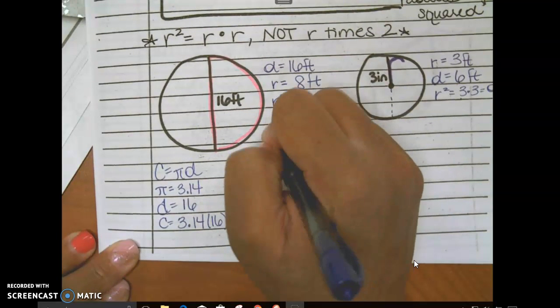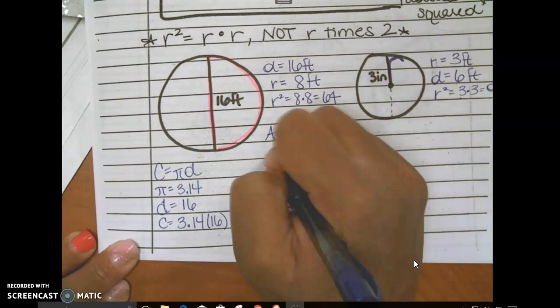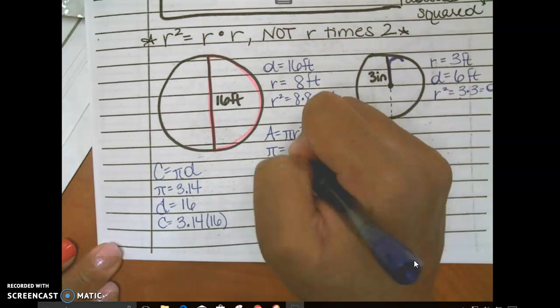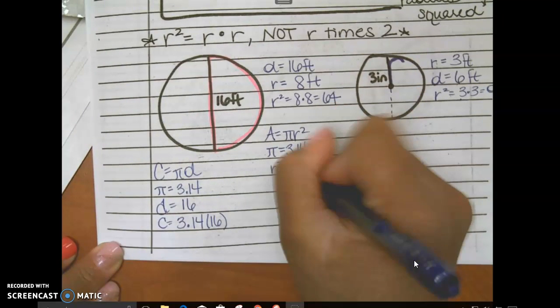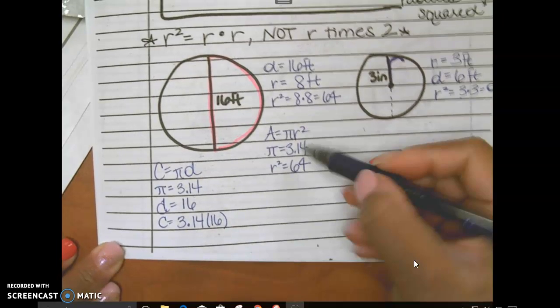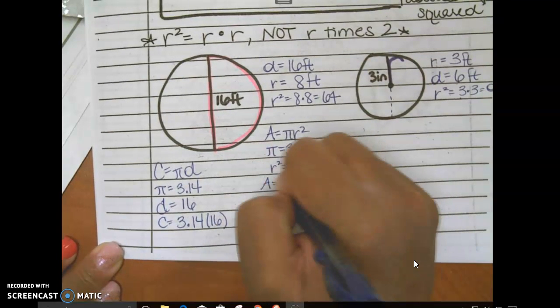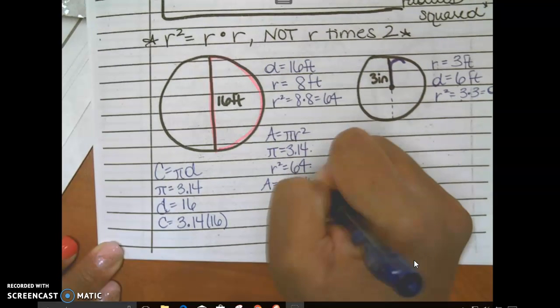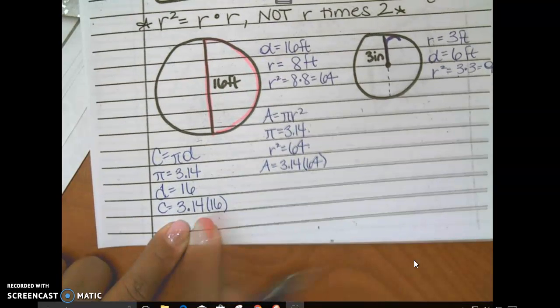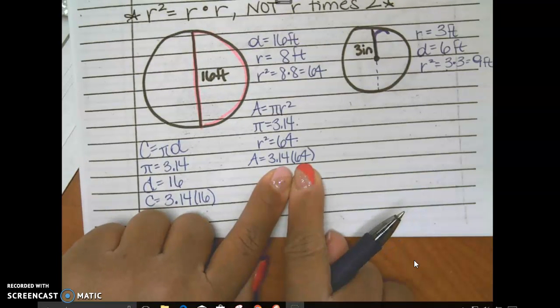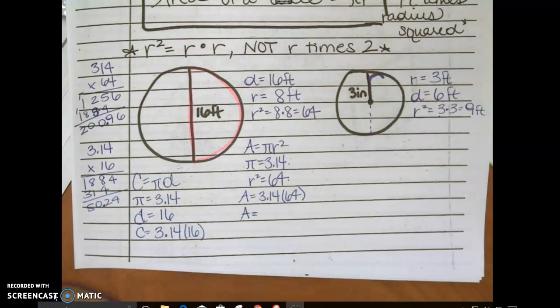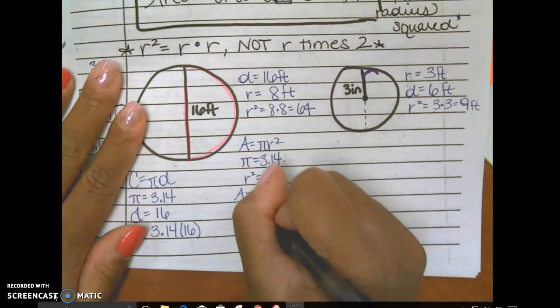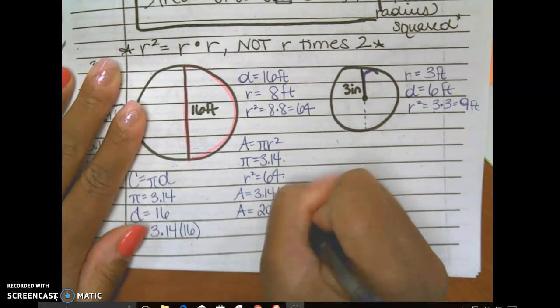So this is now a multiplication problem. 3.14 times 16 is going to be my circumference. Then for area, I'm going to give myself a little bit more room up here. Pi R squared. What is pi? 3.14. What is radius squared? 64. Somebody's paying attention. I am defining each part of my formula, so at the last step all I need to do is multiply. Okay, you've got 200.96 for the area.